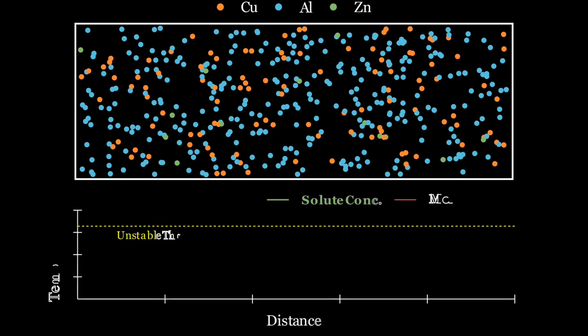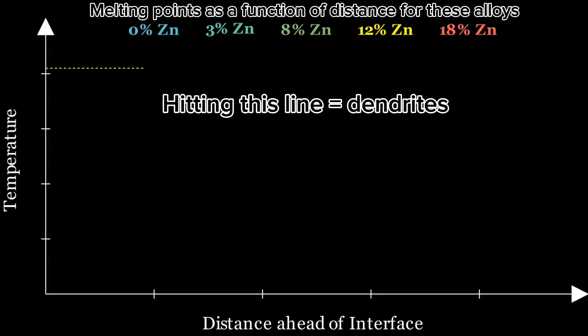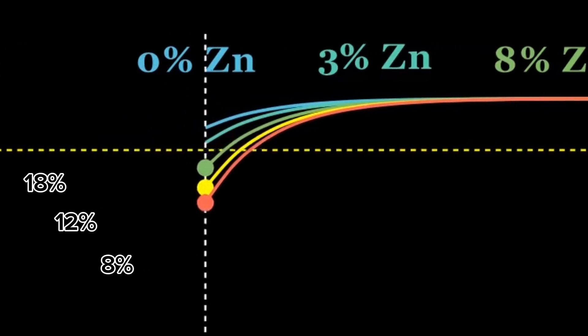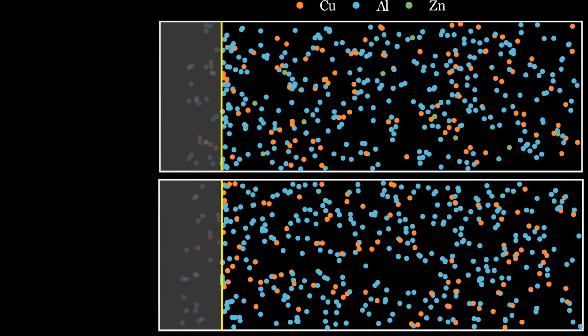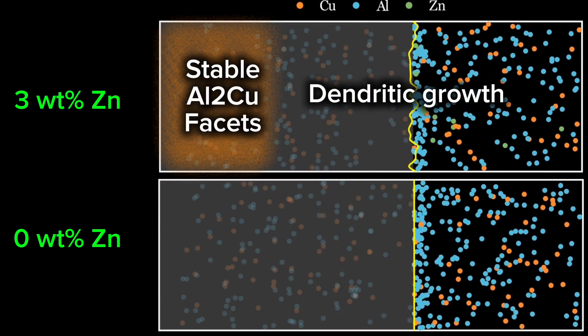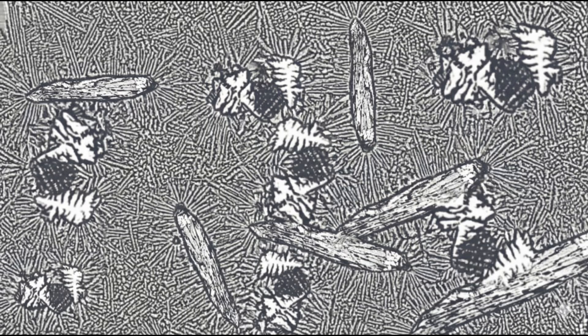Now here is where things get interesting. Adding zinc into the system gives us undercooling from both the aluminum and the zinc, leading to more and faster instability in solidification as we increase zinc concentration. This dotted line represents the degree of undercooling at which dendrites start to grow — as we increase zinc concentration, we hit that line sooner and sooner. Even at 3 weight percent zinc, the structure changes entirely: the time during which faceted intermetallic crystals can stably grow is much shorter. We see a smaller amount and size of intermetallic rods and more tree-like dendrites, and the remaining liquid solidifies first as a binary eutectic and then as a ternary eutectic — a three-phase eutectic.